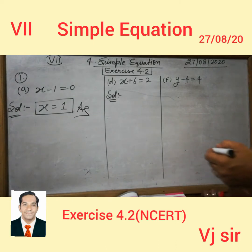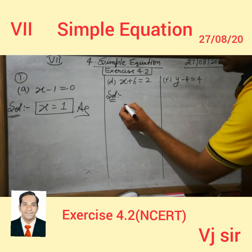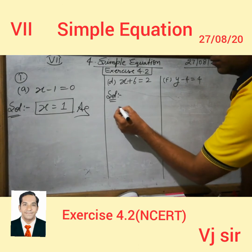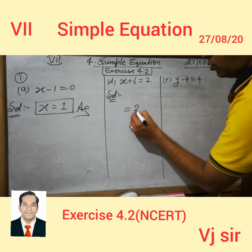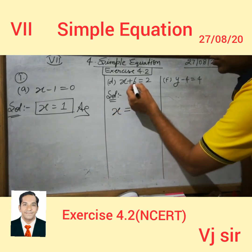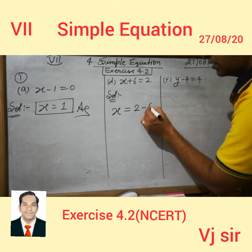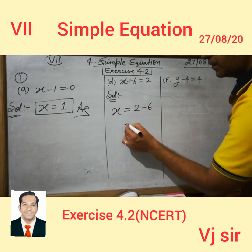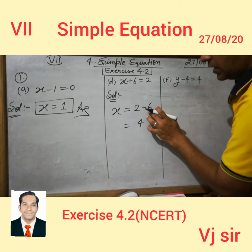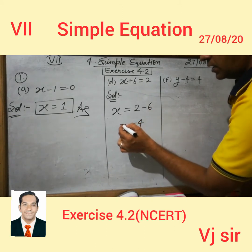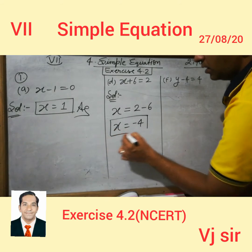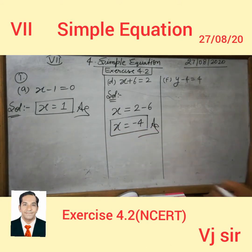X plus 6 is equal to 2. We have to increase the step. X is already on its place. X plus 9 is equal to minus 6. We have to solve: 6 minus 2 is equal to 4. Since 6 is greater than 2, it is a minus sign, and this is your answer. It is so simple.